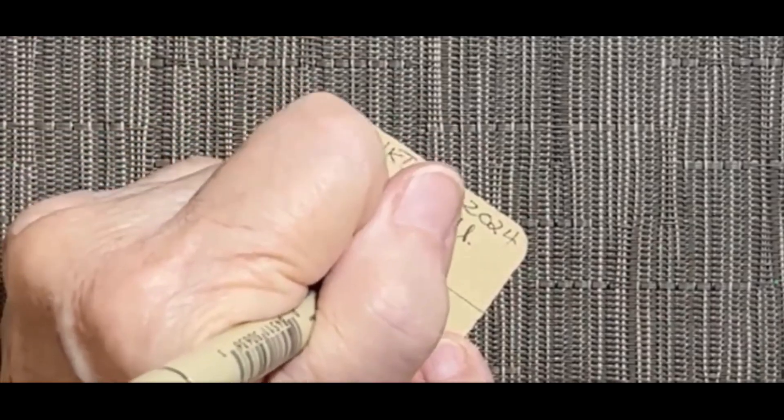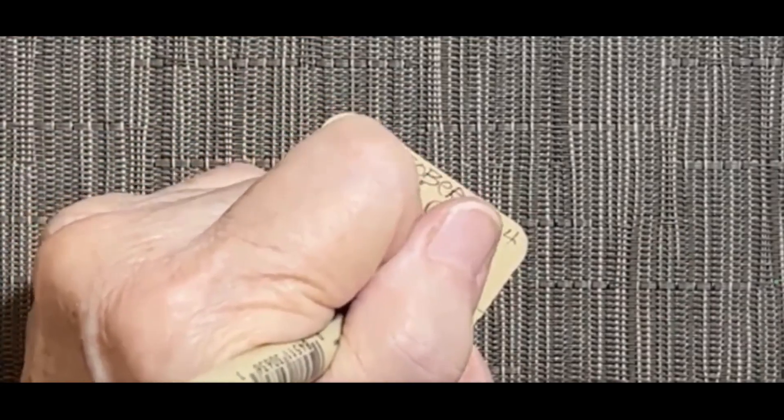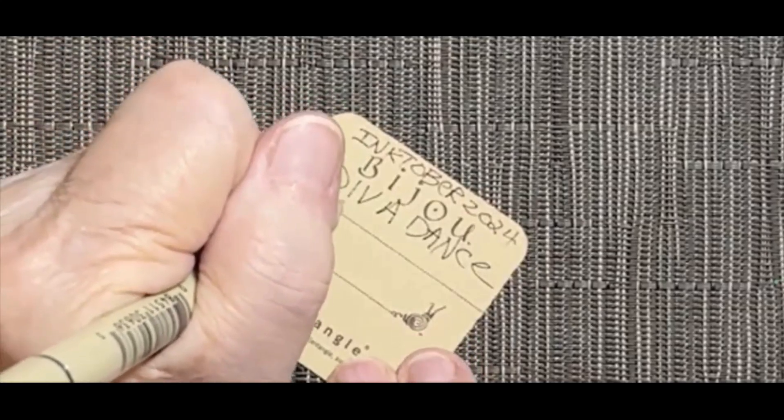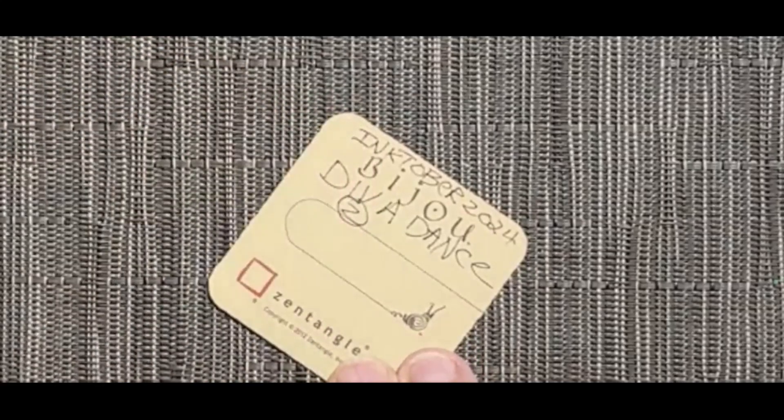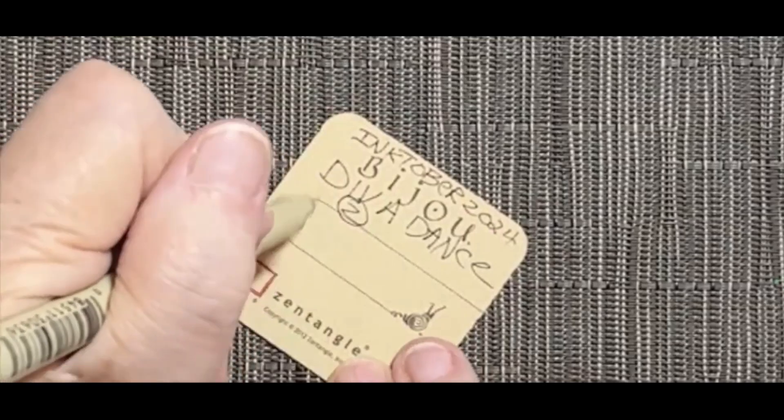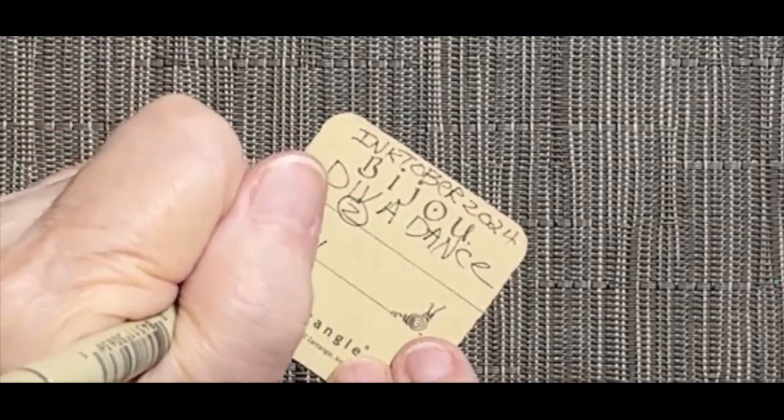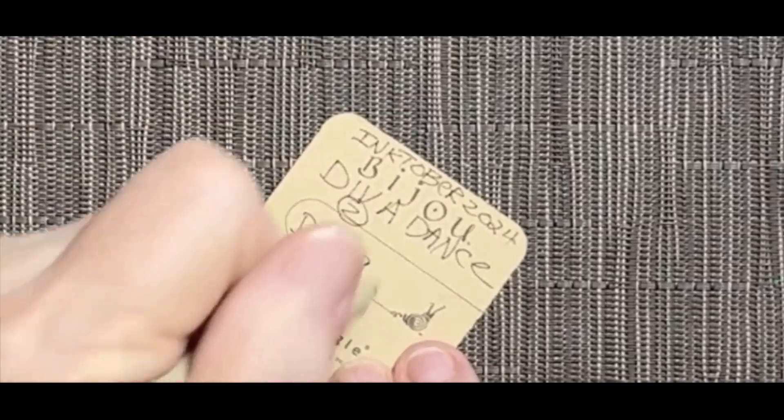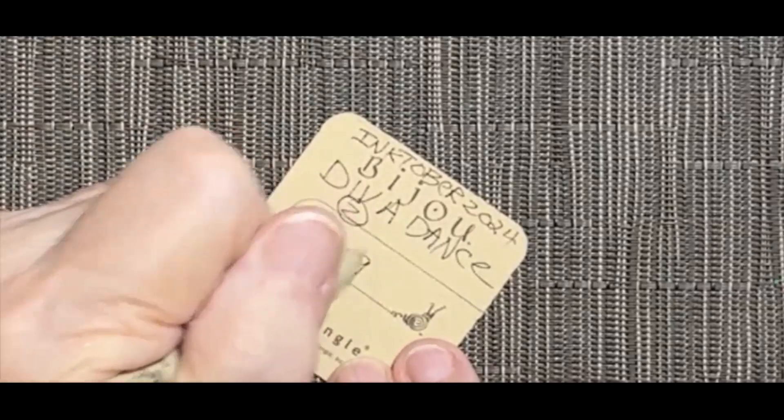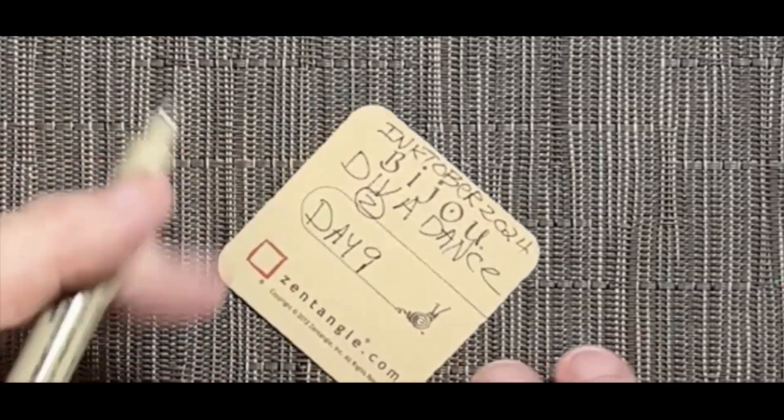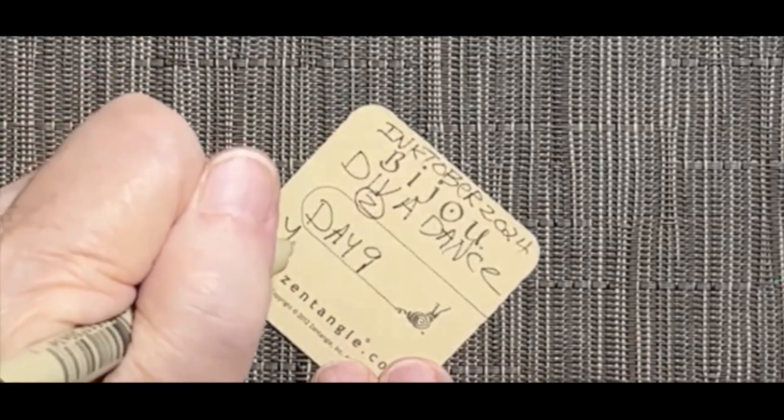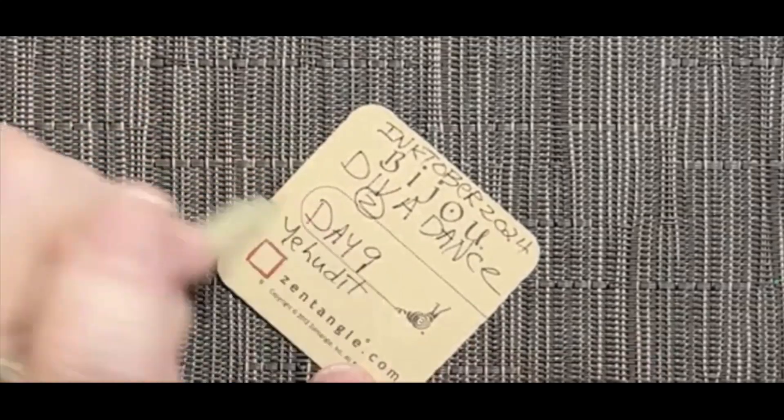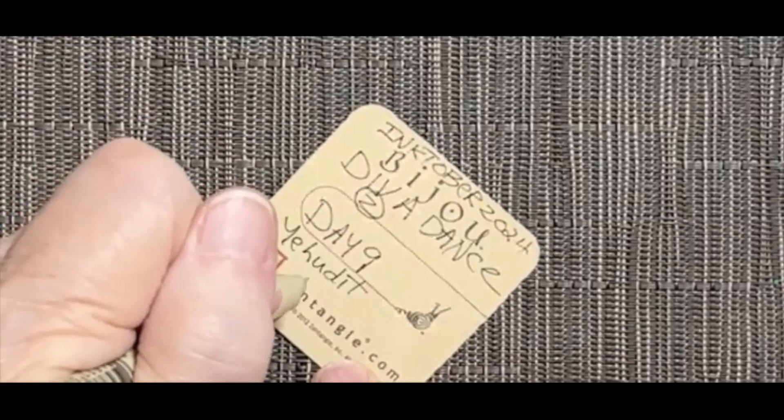This tangle is Diva Dance. And it was created by Zentangle. We are on day nine. And it's moving quickly. October is definitely moving along. I'm going to sign my name, and I'm going to sign the date.